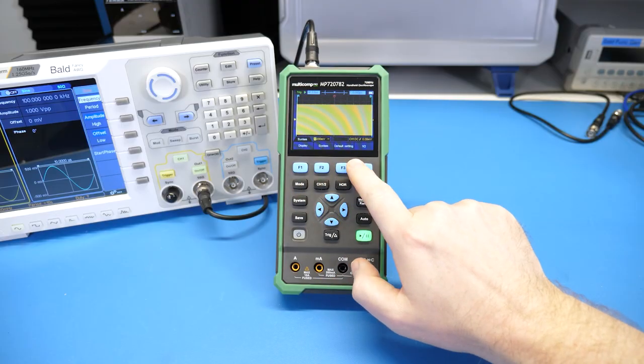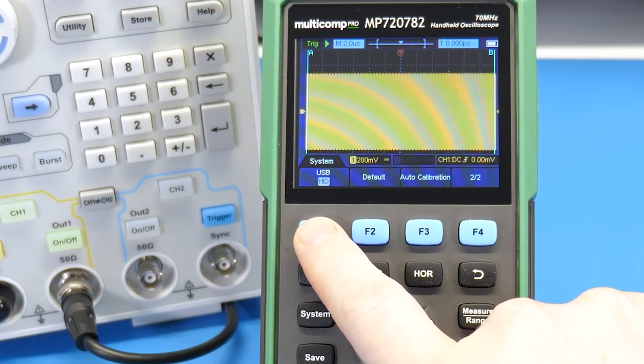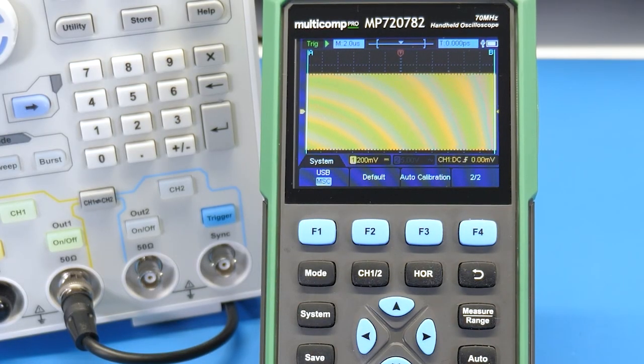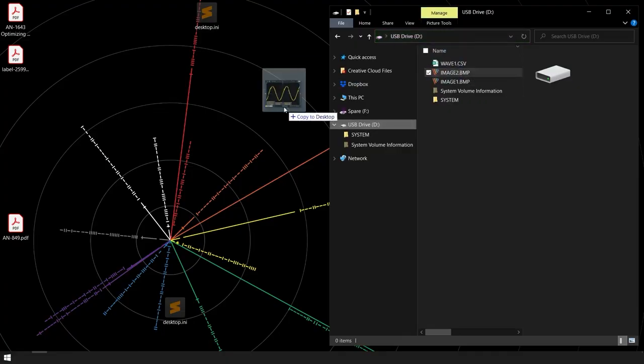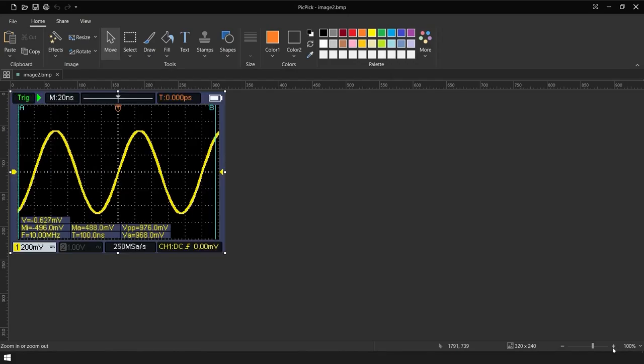To interface with a PC, the scope DMM shows up as a custom HID device or a mass storage controller. So, that means you can just connect the USB cable and then copy the saved screenshots and waveform data to the computer.